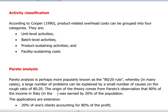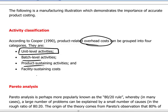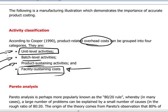Activity classifications, referring to Cooper, allow us to speak of product-related overhead costs as being grouped into four categories — a spin-off from an ABC or activity-based costing exercise. You can look at unit-level activities, batch-level, product-sustaining, and finally those costs which pertain to the facility as a whole and cannot be categorized at any of the other levels.